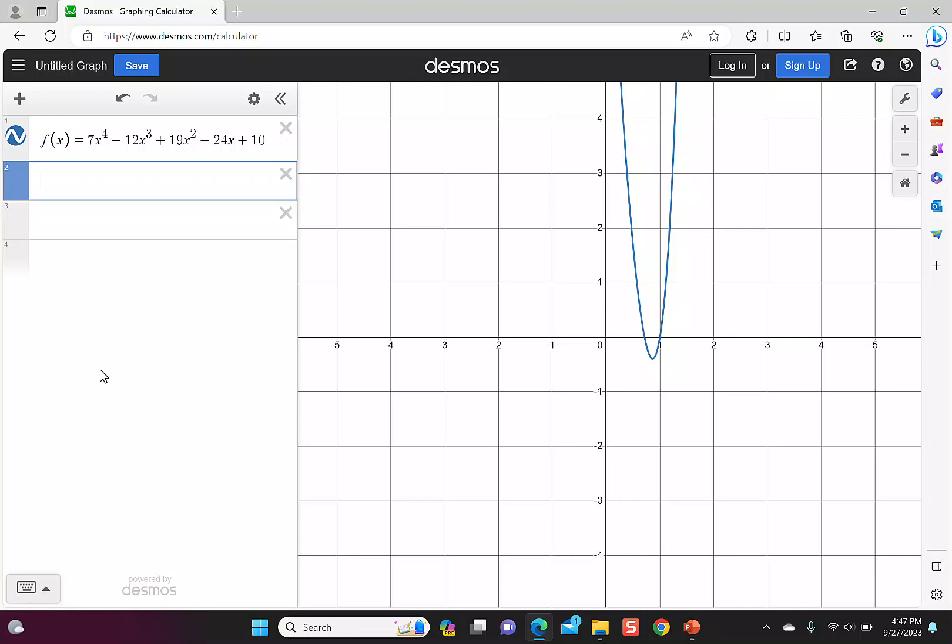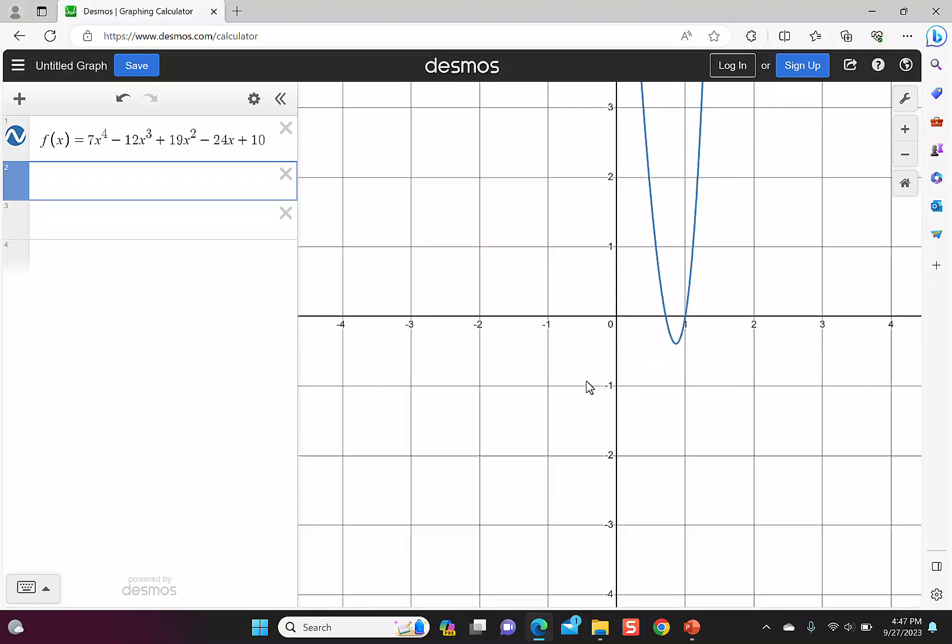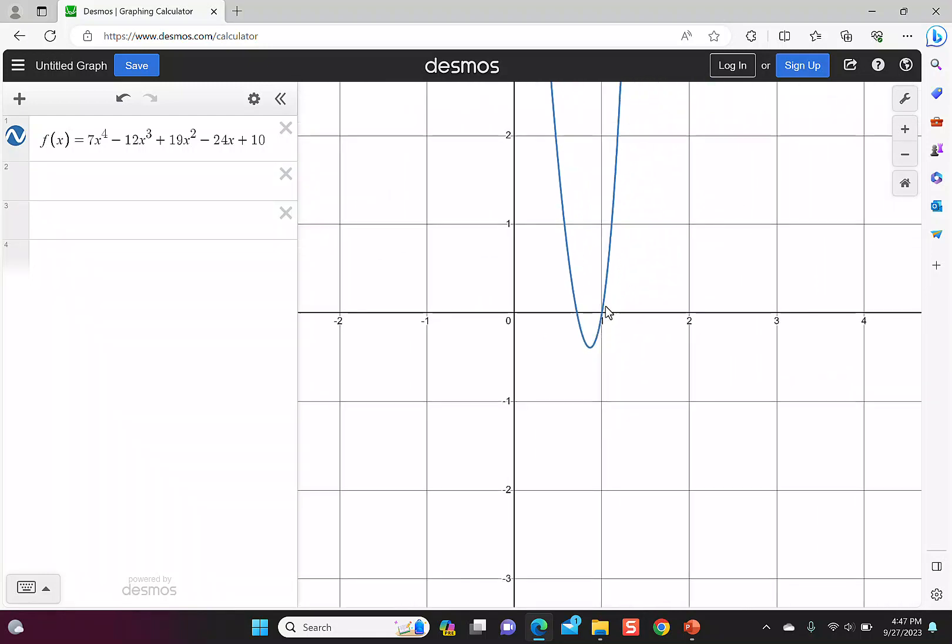Now sometimes you might have to zoom in or zoom out, change the settings, but really we're only concerned with where does the function touch across the x-axis. We're looking for the x-intercepts. I'll zoom in a little bit so we can see it a little bit better, and then when I click anywhere on the graph, it's going to give me the x-intercepts.